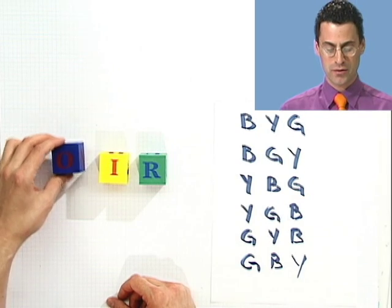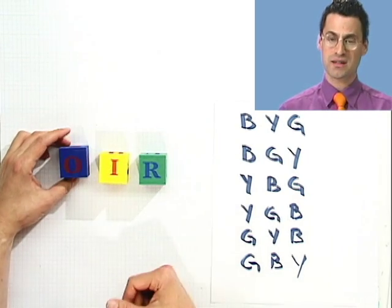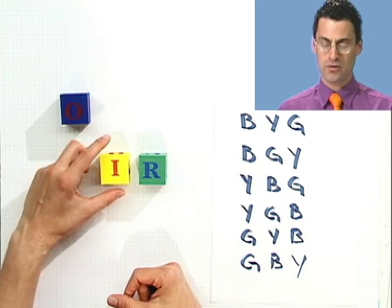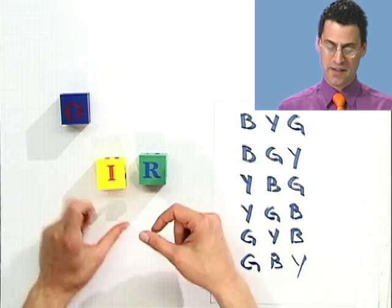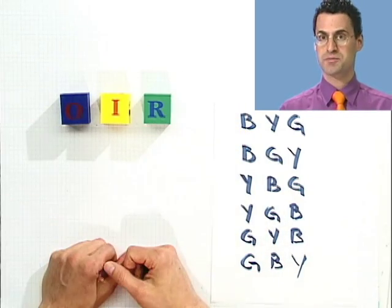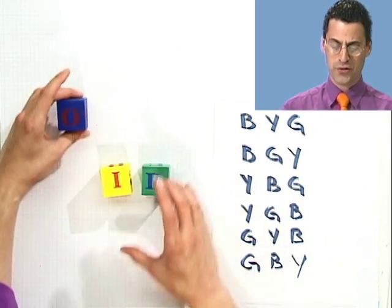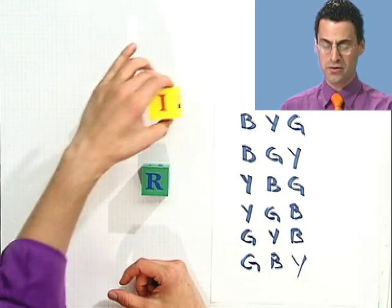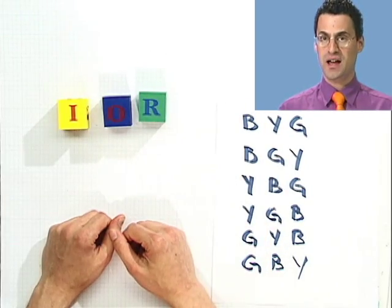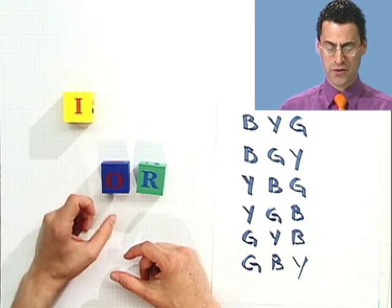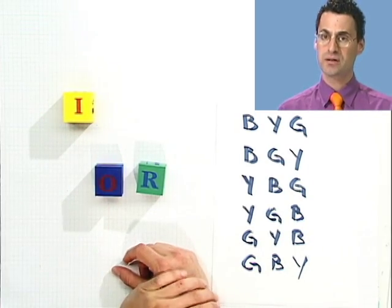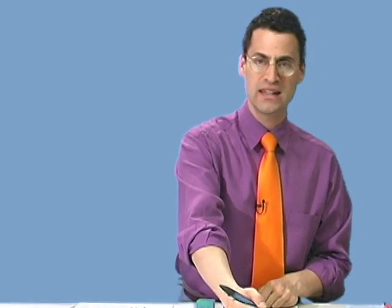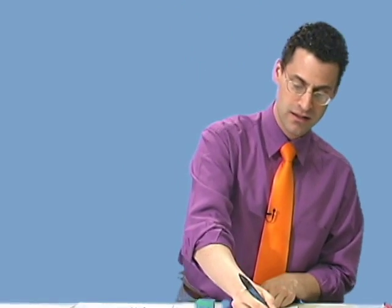That's actually sort of hard to count — all the different ways of ordering these things. But if you think about it, we can figure out a formula. There are three places I could possibly put the blue: here, here, or here — so three ways. But once I make that decision, how many possibilities are there for the yellow? Only two left. And then once I put that down, the green has no choice — it goes in the leftover spot. So how many possibilities are there total? Three times two times one. And in fact, that's just the factorial. So if you want to order n different things, the number of ways is just n factorial.